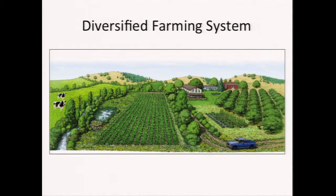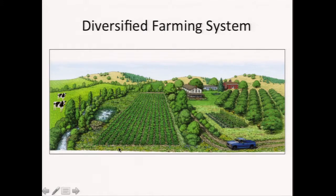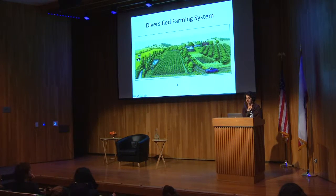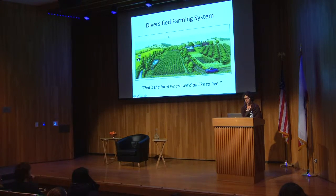Here's what a diversified farming system might look like: smaller fields with different types of things being planted — row crops, mixed crops, and orchards — some hedgerows around the fields, riparian buffers, meadows with livestock, and natural areas. All the different elements from plot to field to landscape scale are part of this diversified farming system. When I showed this picture at a talk on pollinators to the California State Board of Agriculture, one of the growers said, 'That's a farm where we'd all like to live.' It suggests that this is a good place for people as well as for agriculture.